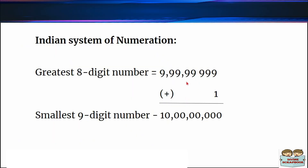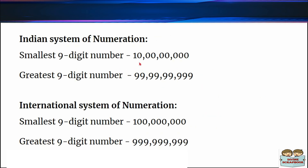If we add 1 to the greatest 8-digit number, we will get the smallest 9-digit number, that is 10 crore. In the Indian system of numeration, the smallest 9-digit number is 10 crore, and the greatest 9-digit number is 99,99,99,999. In the international system, the smallest 9-digit number is 100,000,000 and the greatest 9-digit number is 999,999,999.